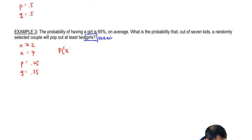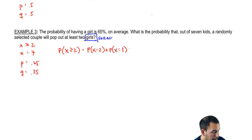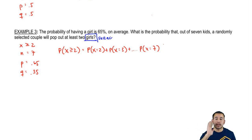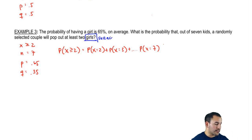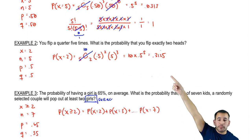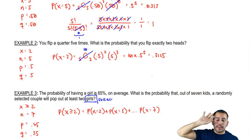So the probability that x is greater than or equal to 2 is the probability that x equals 2, plus the probability that x equals 3, and so on all the way up to the probability that x equals 7. That's six separate calculations — a lot of work — so let's think of a way to make this easier.